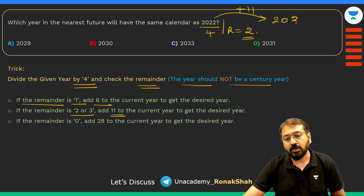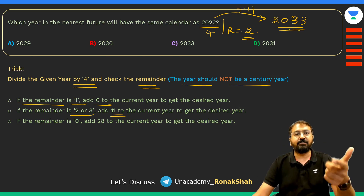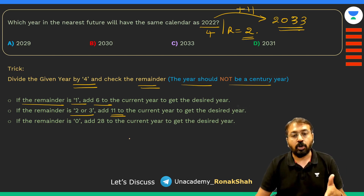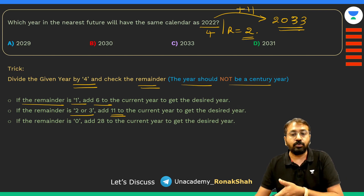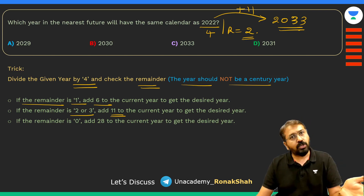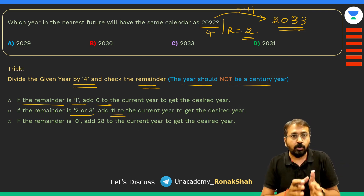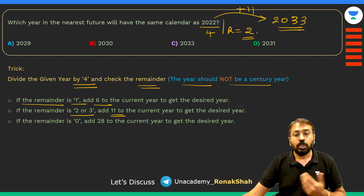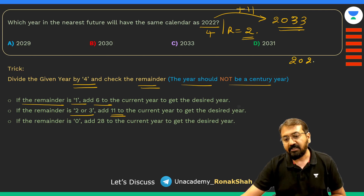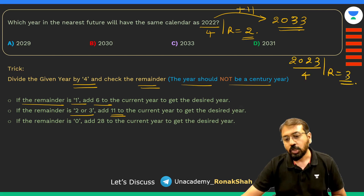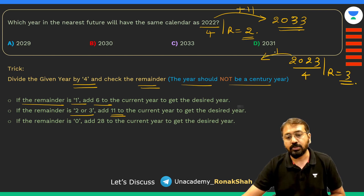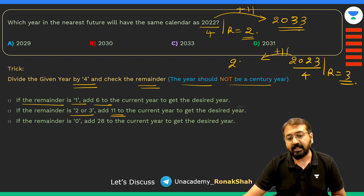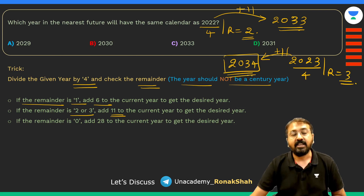So the next year after 2022 with the same calendar will be 2033. For 2023, dividing by four gives remainder three — since the remainder is three, we add 11 to get 2034, which will again start with a Sunday and end with a Sunday.